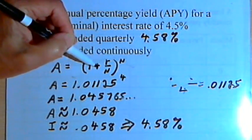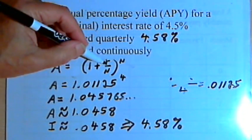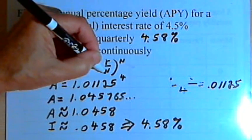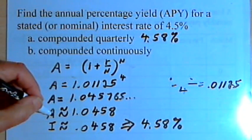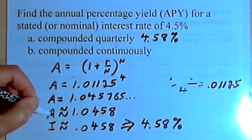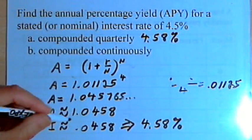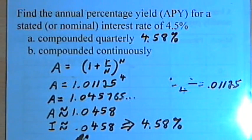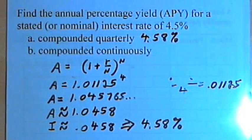We plugged in the numbers that we had, the percentage rate r and the number of compounding periods n. We calculated what A equaled. We remembered that A also includes the amount of money we invested, which was 1, so we subtracted 1 from it and ended up with the interest rate. We turned the interest rate into a percentage, and that's our answer.